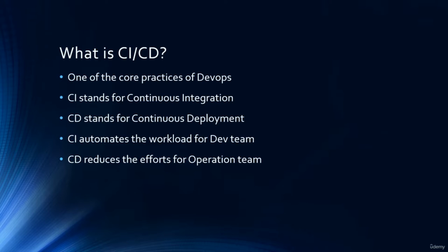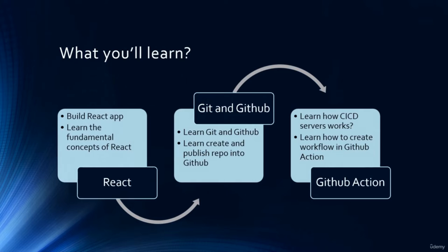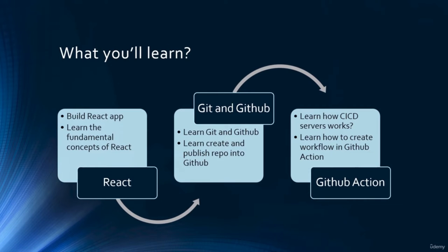The purpose of CI-CD is to reduce the workload and effort for both the developer team and the operation team in order to deploy new code or new changes. In this course, you will learn how to create a full-functionality React app, how to create and publish repositories to GitHub, and the main thing — GitHub Action, which is a CI-CD server — and you'll get to know how it works in the real world.